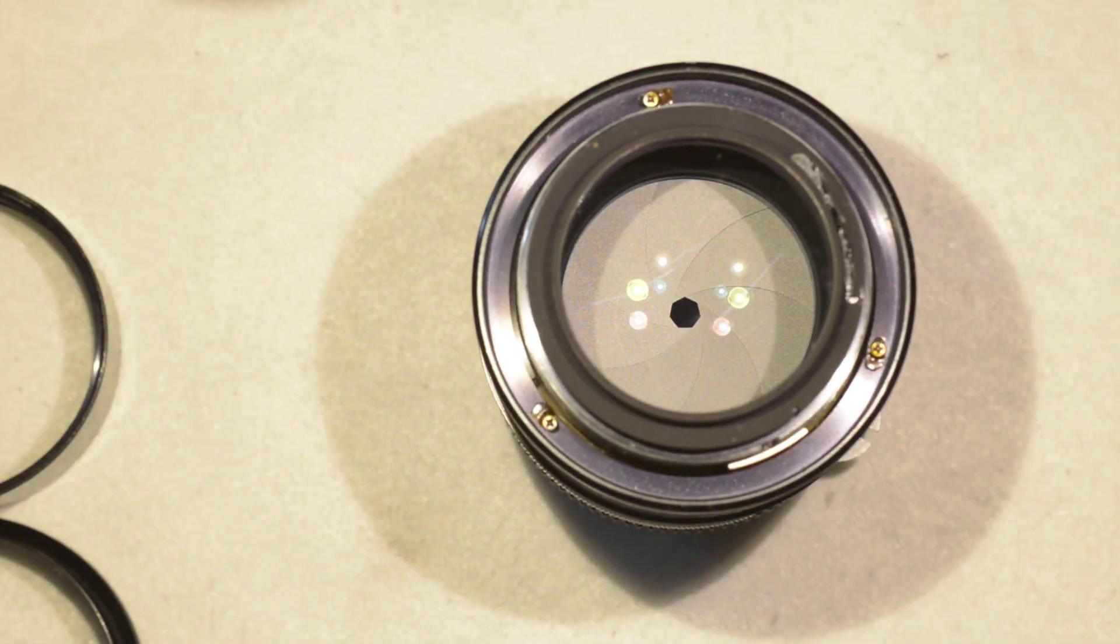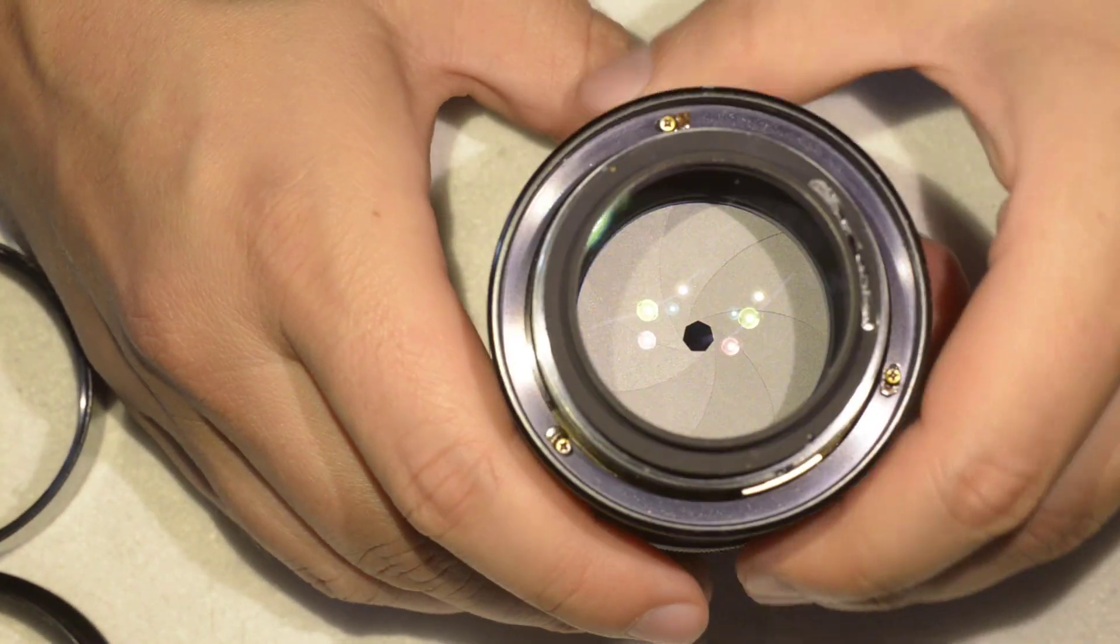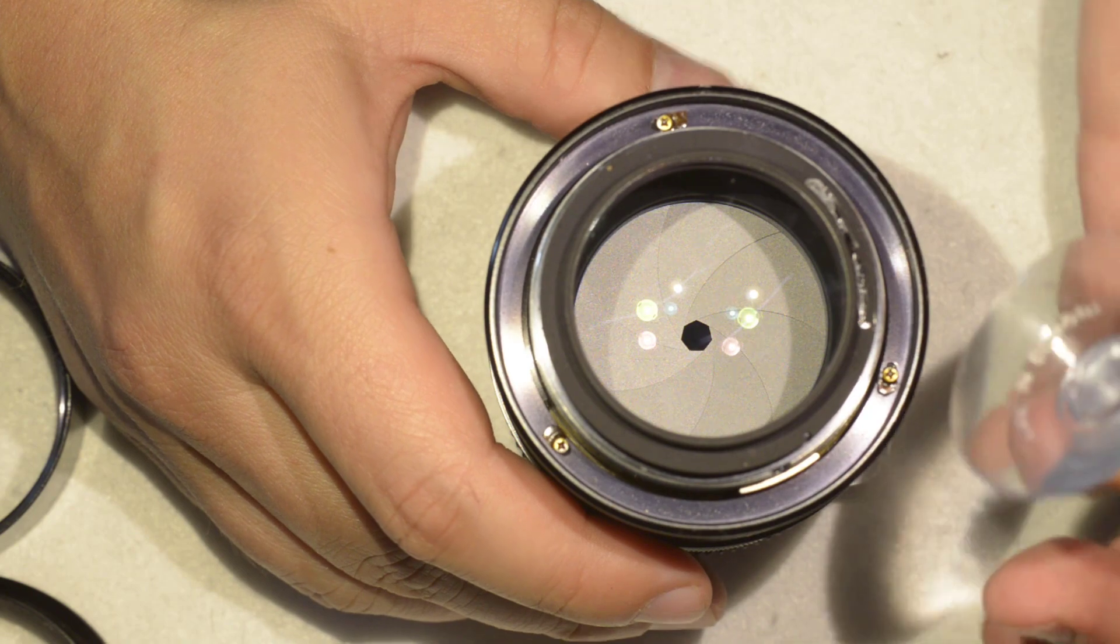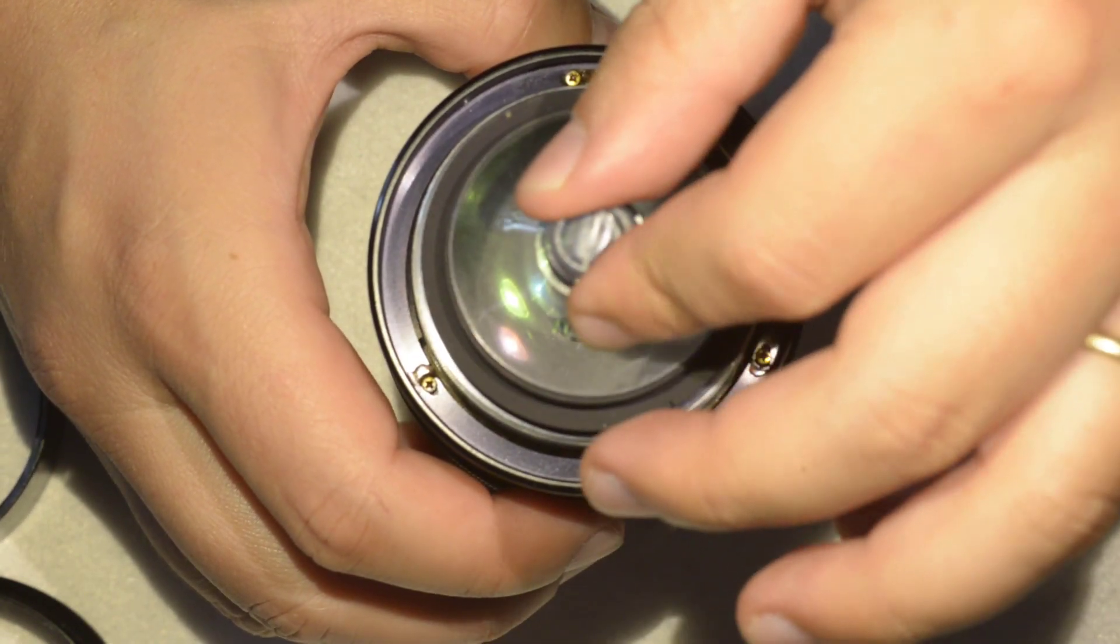Then the front lens comes available to remove. So I pick this suction cup here and then I'm able just to pull the lens here.